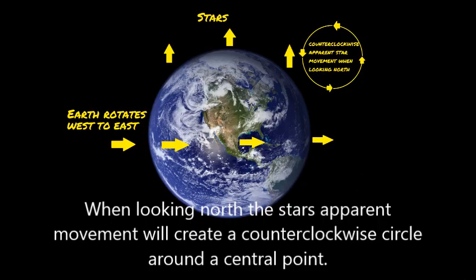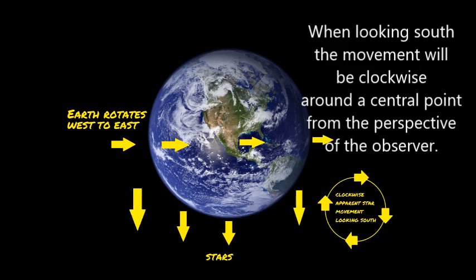When looking north, the stars' apparent movement will create a counterclockwise circle around a central point. When looking south, the movement will be clockwise around a central point from the perspective of the observer.